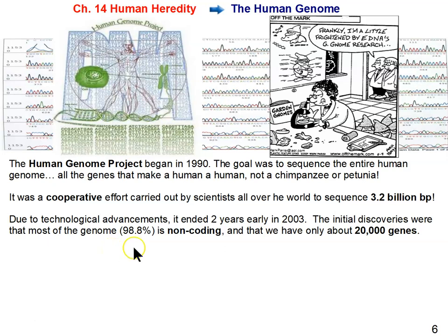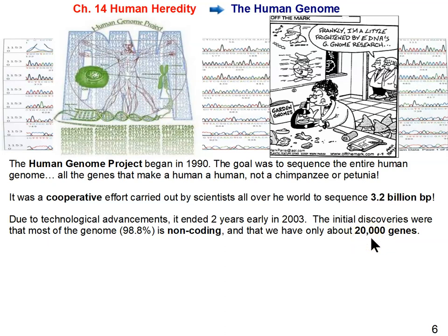What they discovered from the Human Genome Project is that about 98.8% of all our DNA is non-coding — it doesn't code for proteins, though much of it codes for functional RNAs. A lot of what this 98.8% of our genome does remains a mystery under investigation. We only have about 20,000 genes, which is strange because we have at least 100,000 proteins. Because of RNA splicing, multiple proteins can be produced from one gene, which helps explain how we can have 100,000 proteins but only 20,000 genes.